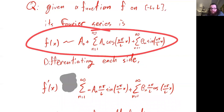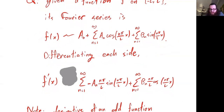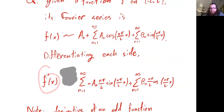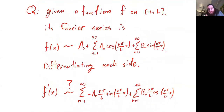What we were working with up here was a Fourier series. The tilde notation indicates that this function is not necessarily equal to this Fourier series — they may differ at points of discontinuity, but at points of continuity they're equal. The question is: if we differentiate the function and differentiate the Fourier series, is the resulting series the Fourier series of the derivative?